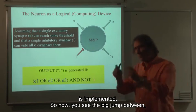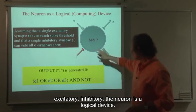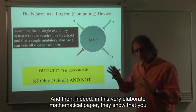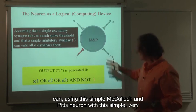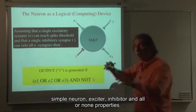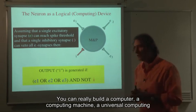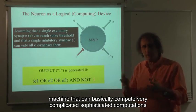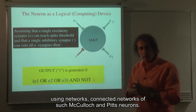So they wanted to look at a neuron as a logical device with threshold. An output is generated only if this logical paragraph, this logical statement, is implemented. So now you see the big jump between looking at that neuron as producing spikes and having synapses excitatory or inhibitory, to your neuron as a logical device. And they indeed, in this very elaborate mathematical paper, they show that you can, using this simple McCulloch and Pitts neuron with this very simple inputs, excitatory, inhibitory, and all or none properties, you can really build a computer, a computing machine, a universal computing machine that can basically compute very complicated, sophisticated computations using networks, connected networks of such McCulloch and Pitts neurons.